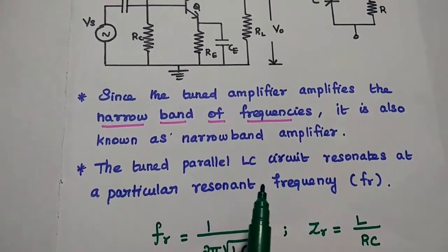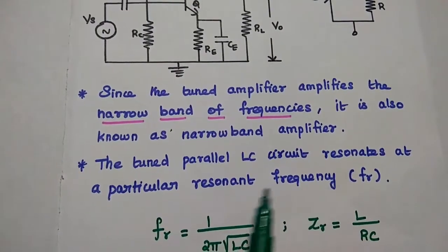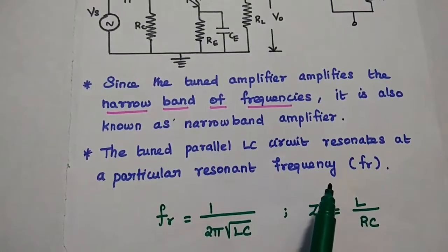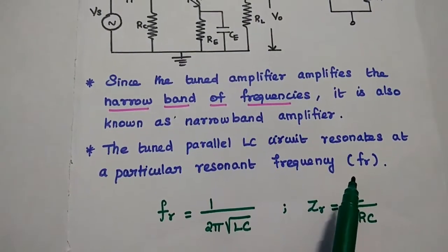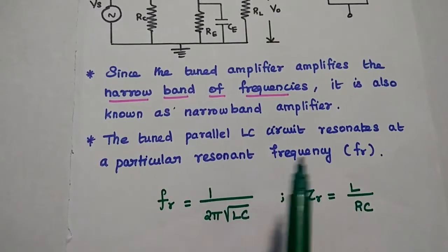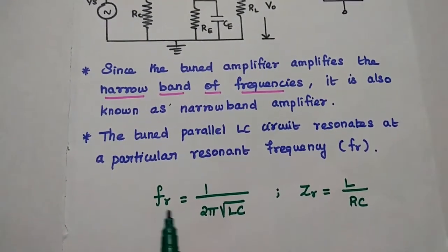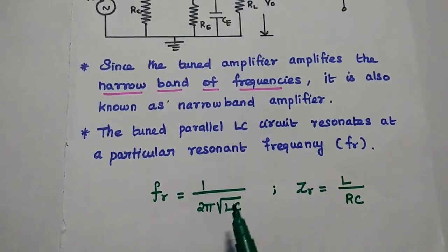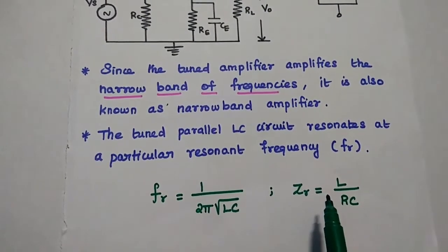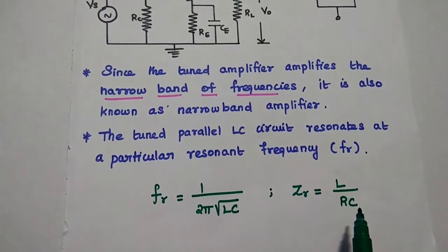The tuned parallel LC circuit resonates at a particular resonant frequency where we can get the maximum output. So we can easily tune the LC parallel circuit to the particular frequency using the formula fr = 1/(2π√LC) and the resonant impedance Zr = L/(RC).